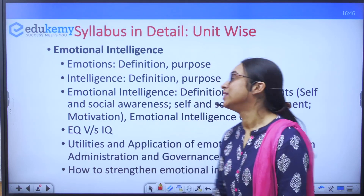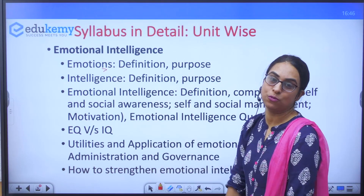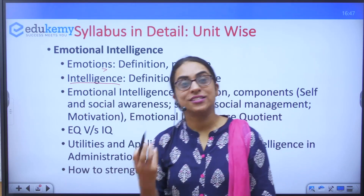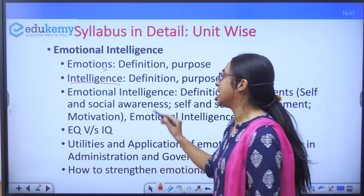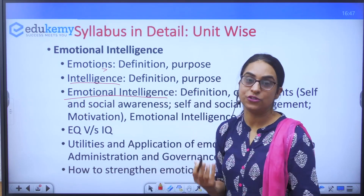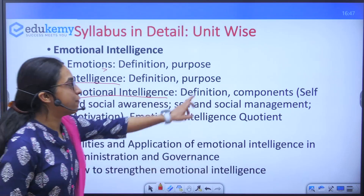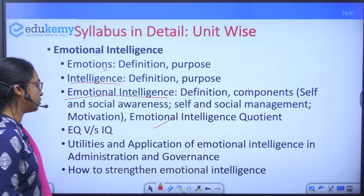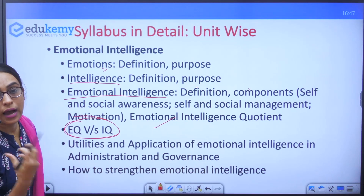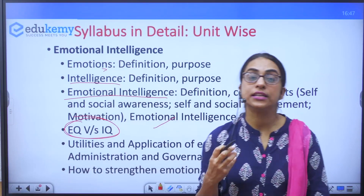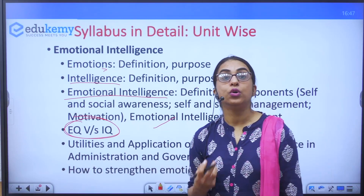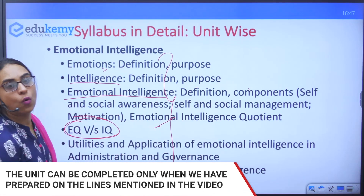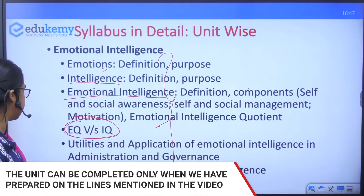The fourth unit is emotional intelligence, the most favorite unit. The checklist includes: what is emotion and its purpose; what is intelligence; what is the definition of emotional intelligence and its components; what is emotional quotient (EQ); how EQ is different from IQ; the utility of emotional intelligence in governance; and how to strengthen your emotional intelligence. This unit is complete only when you have covered all these aspects in detail.